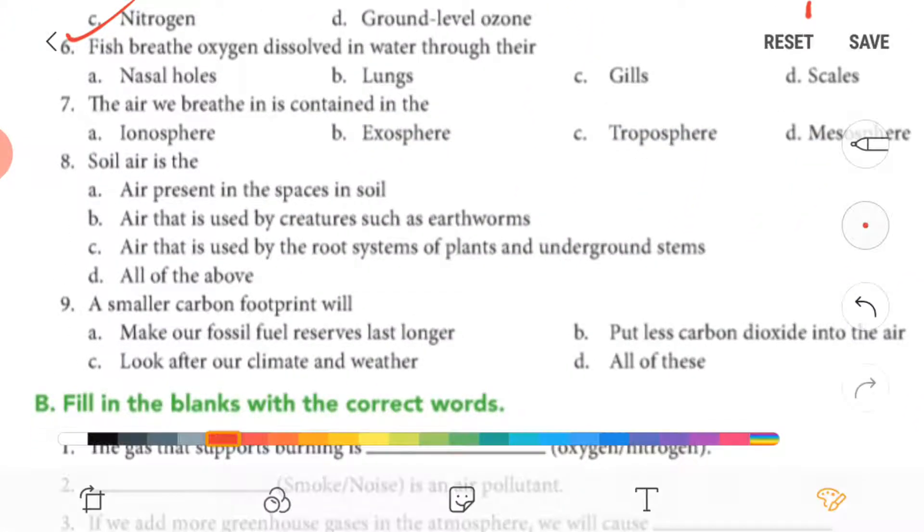Question 6, fish breathe oxygen dissolved in water through their gills. Seven, air we breathe in is contained in the troposphere.